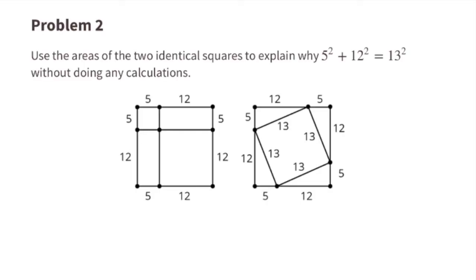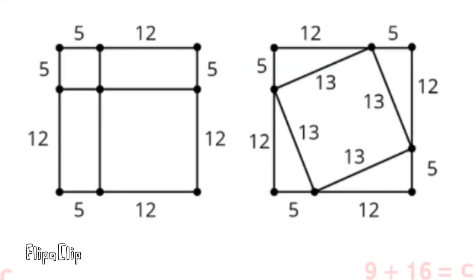Problem number two: use the areas of the two identical squares to explain why 5 squared plus 12 squared equals 13 squared, without doing any calculations. The shape on the left contains a square that measures 12 squared and a square that measures 5 squared. It also contains two rectangles that are 5 by 12, and those two rectangles can be cut in half to form four triangles.